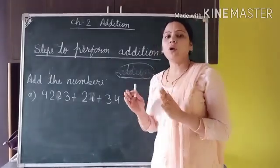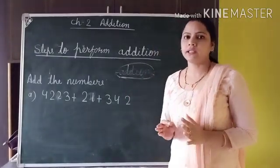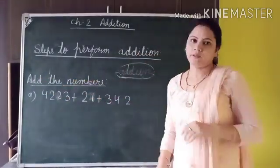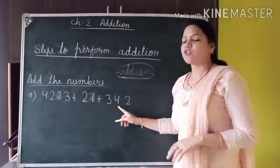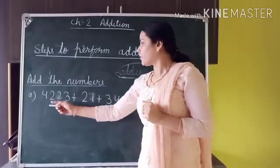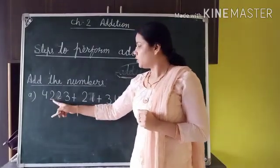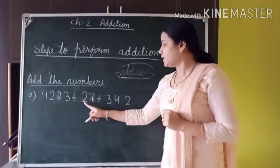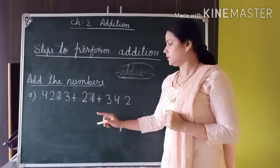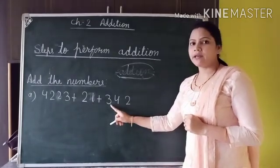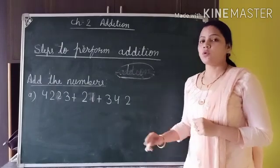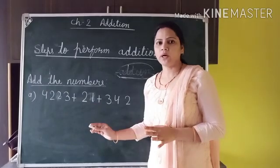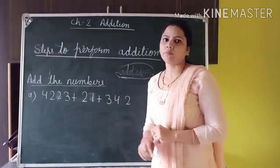Now we will learn how to arrange numbers vertically to perform addition. I have taken 3 different numbers: the first is 4,223, the second is 21, and the third is 342. We have to arrange these numbers vertically first, and then perform the addition.